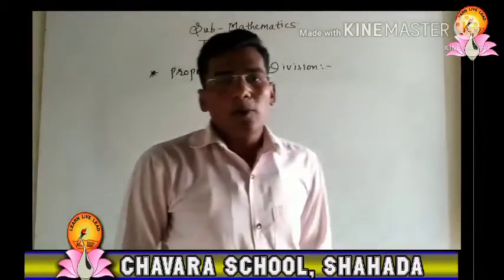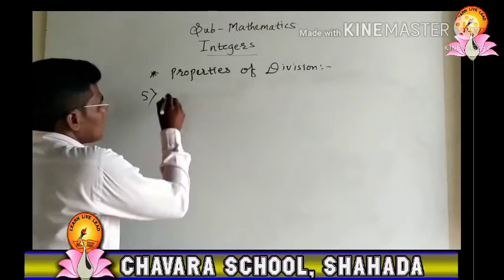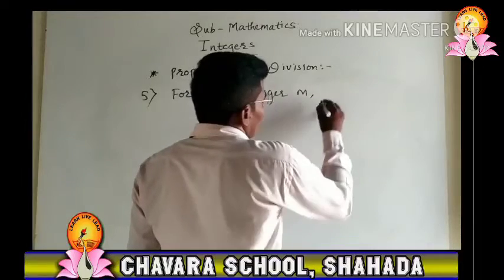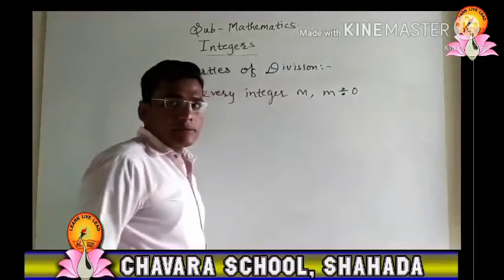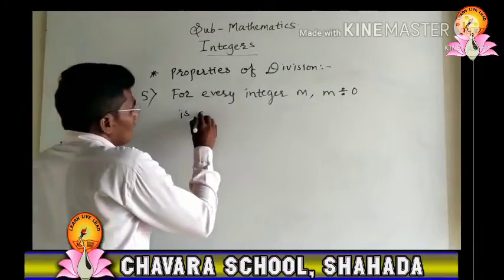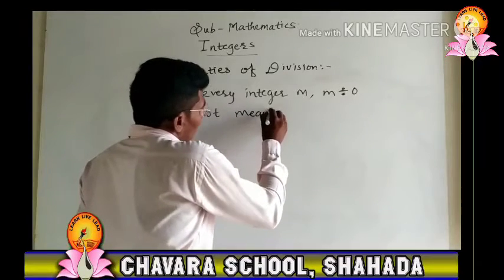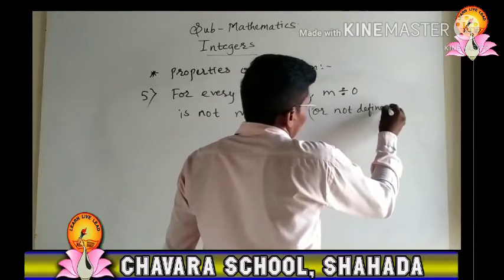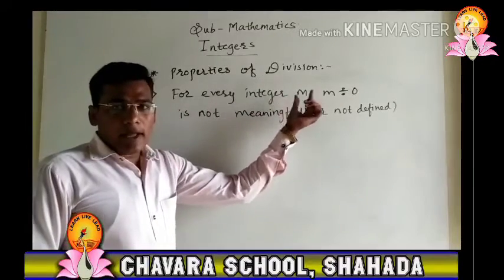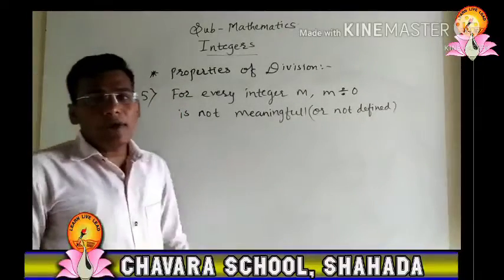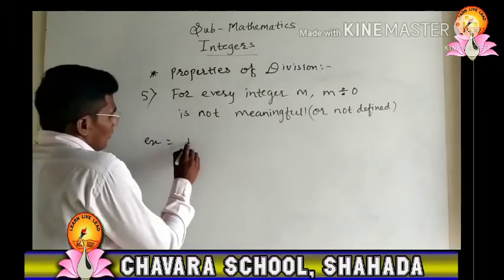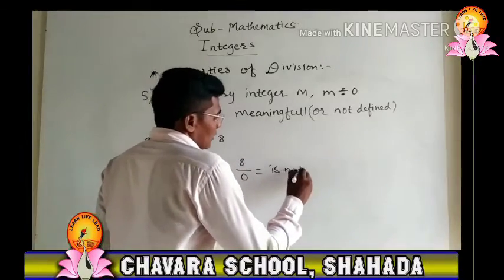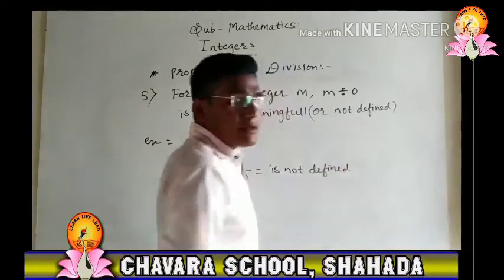Property number 5: for every integer m, m divided by 0 is not meaningful. For example, if m equals 8, then 8 divided by 0 is not defined or not meaningful.